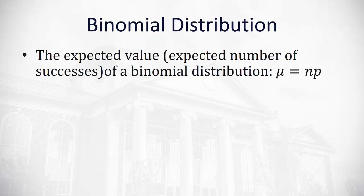With the binomial distribution, we have a shortcut formula to help us calculate the expected value or the expected number of successes, and that is we take the number of trials times the probability that any one trial is successful.